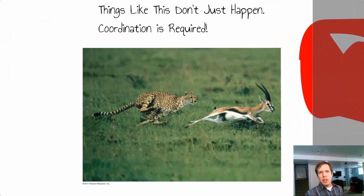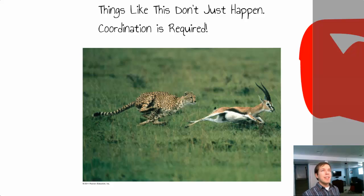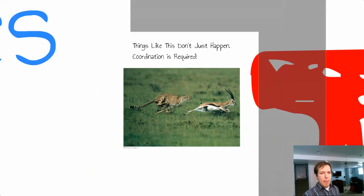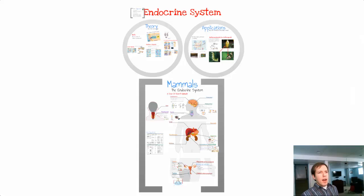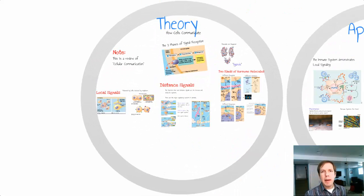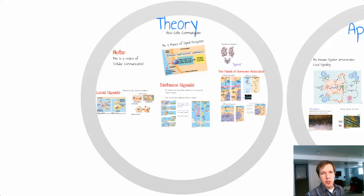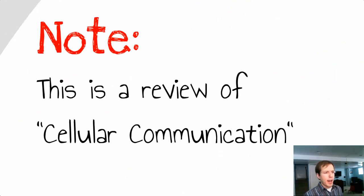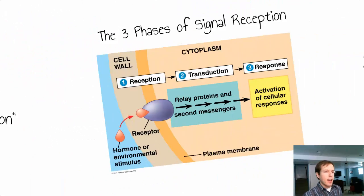Hormones are all about communication within the body — both long-term and short-term communication — in order to coordinate different cells within different tissues so that as conditions change in the environment, those hormones will respond to those changes. A little bit of theory first: cell communication. We'll get back to some previous topics in the course on cells and how cells interact with each other.